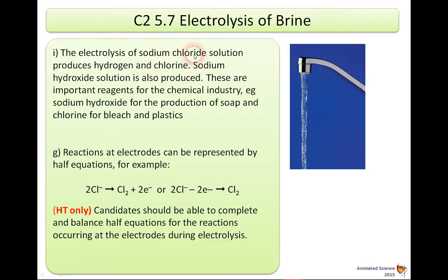The electrolysis of sodium chloride solution produces hydrogen and chlorine. Sodium hydroxide solution is also produced. These are important reagents or chemicals for the chemical industry — for example, sodium hydroxide is used for the production of soap, and chlorine for bleach and plastics.